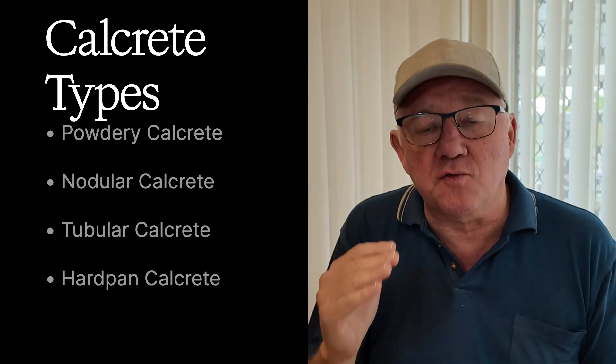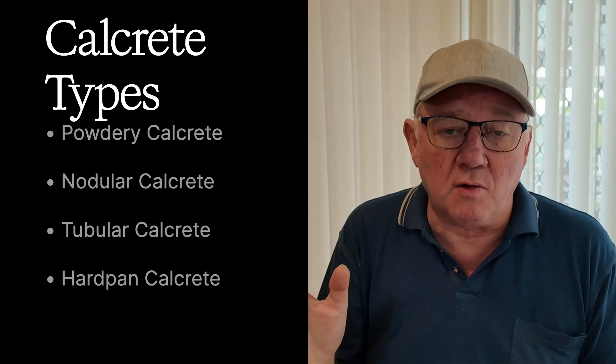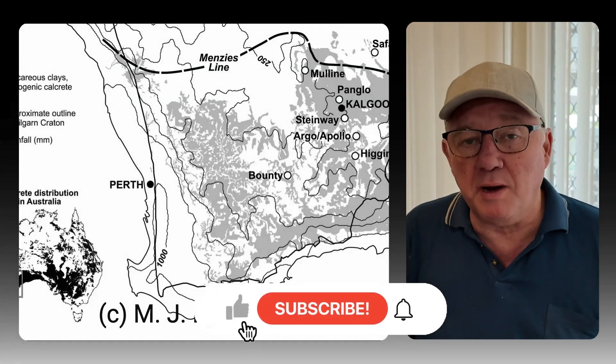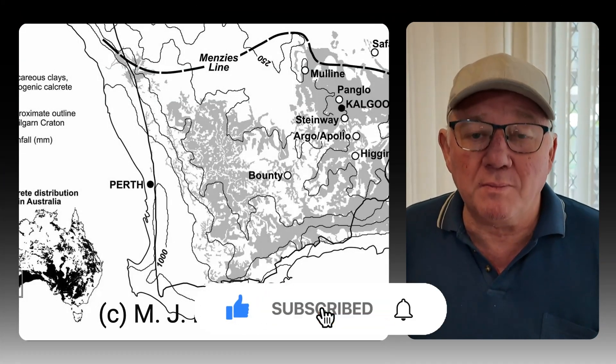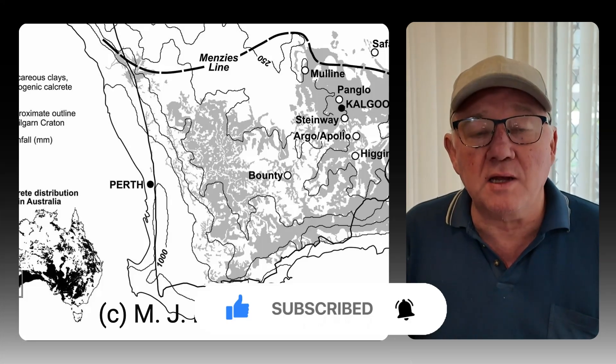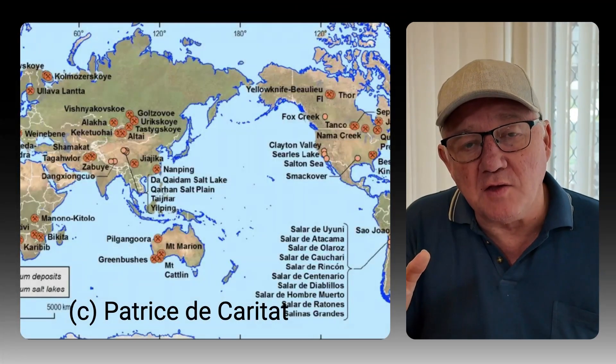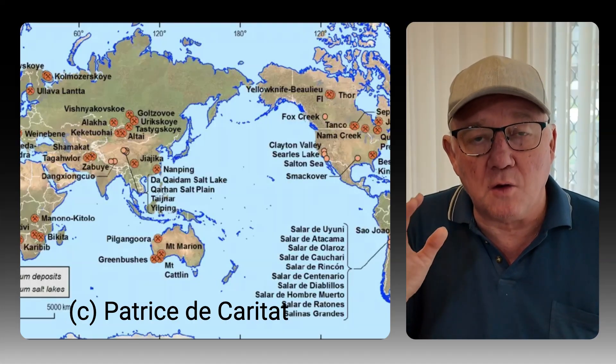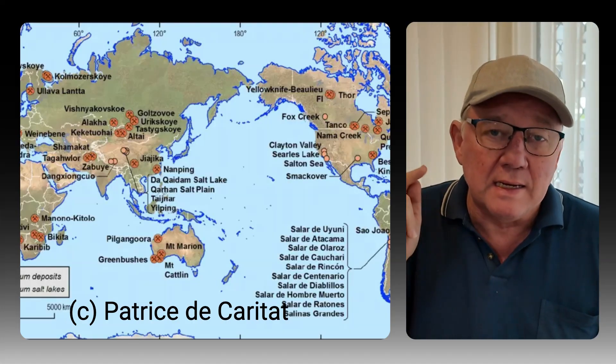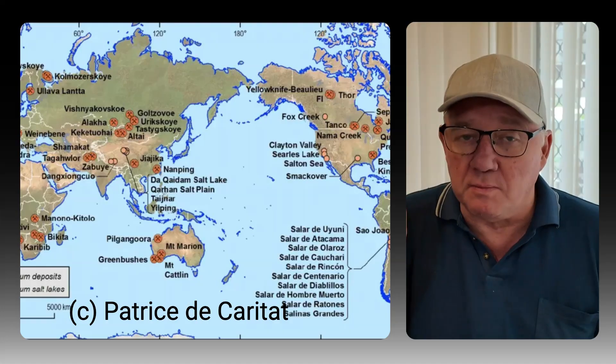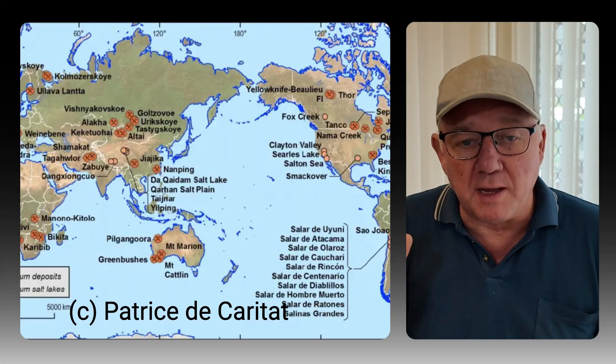Calcrete is common in dry and semi-dry parts of the world. It is really widespread in Australia, covering about 21% of the land mass — higher than most other places in the world, mostly because Australia is more arid than most other places on Earth, apart from Antarctica. It also occurs in the United States, where it is actually called Caliche. So it's pretty much the same stuff, different name, different place.